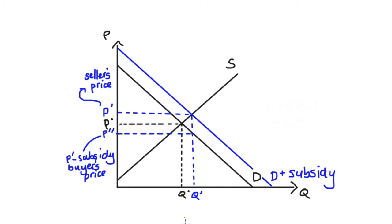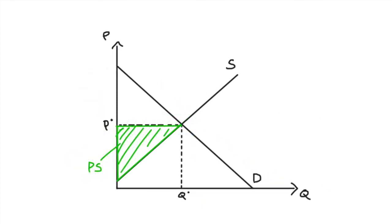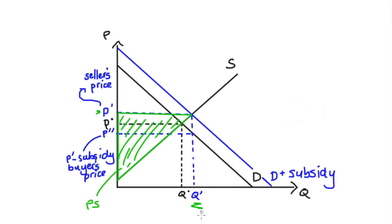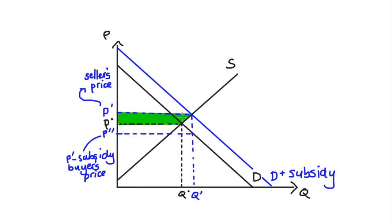Our producer surplus: we do a similar analysis. It's still the area above the supply curve, below the price. Now the producers are selling more — Q prime is above Q* — and they have a higher price, P prime above P*. That's their producer surplus after the subsidy. Comparing before and after, we can see the difference. This is expected: because of the subsidy, we're trading more and producers are getting a higher price per unit, so their producer surplus has increased.